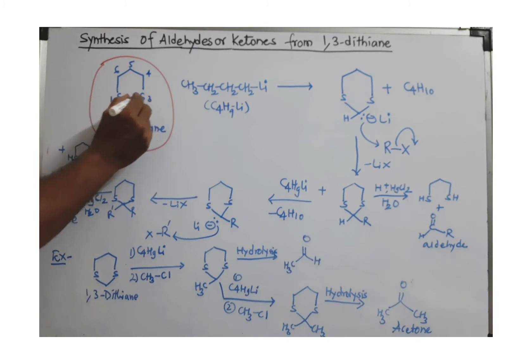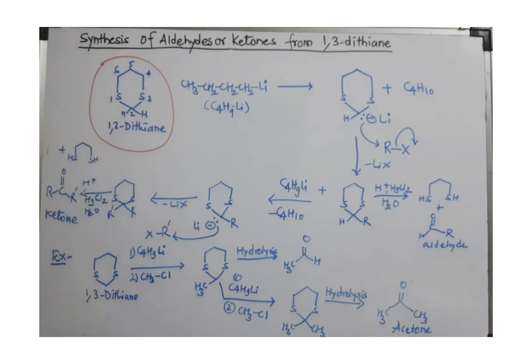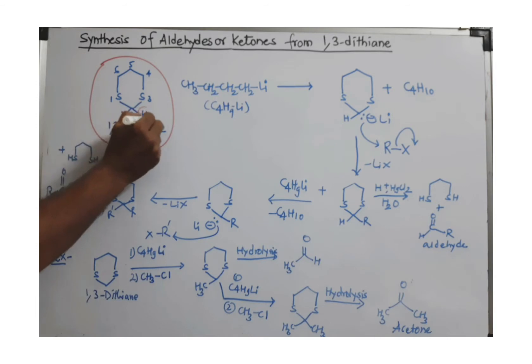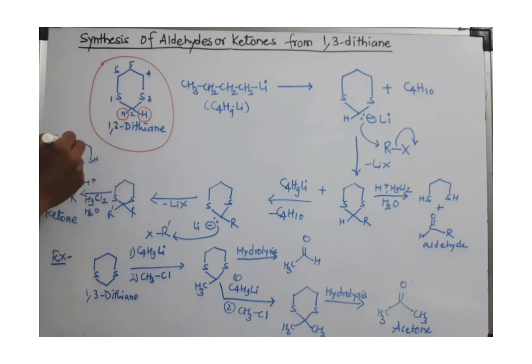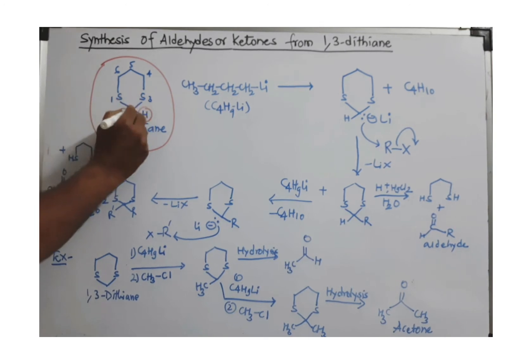Why is it called 1,3-dithiane? Because there is sulfur at the one and third positions in the ring. I want to add more information: the protons, the hydrogen atoms present at carbon number 2, are acidic. Remember, these two protons are acidic.